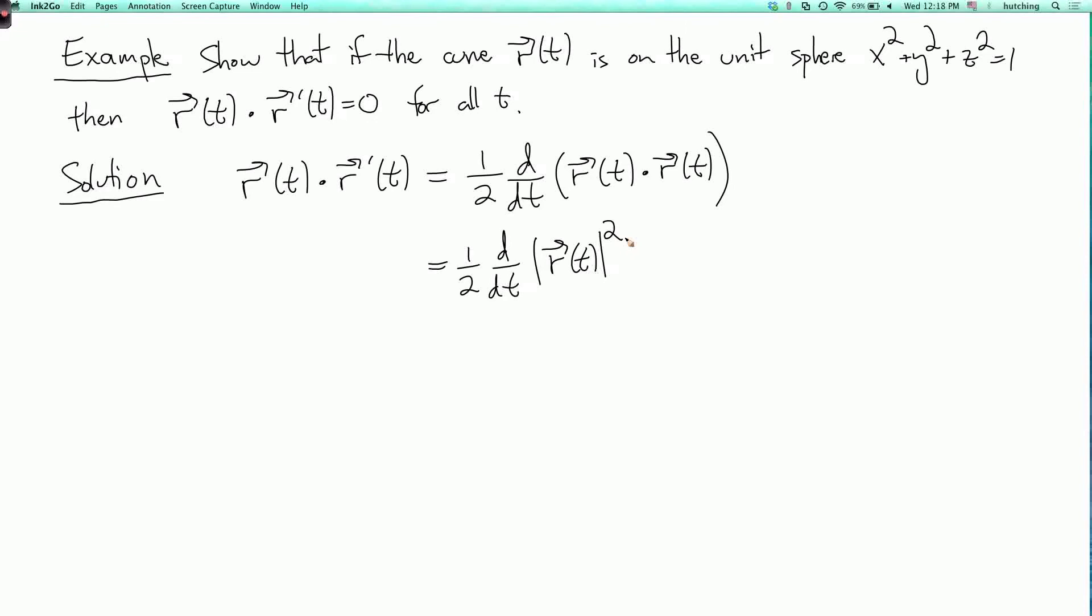But r of t is always on the unit sphere, x squared plus y squared plus z squared equals 1, so its length is always 1. So this is one-half the derivative of 1, which of course is 0. And that's what we were supposed to prove.